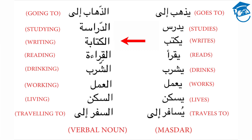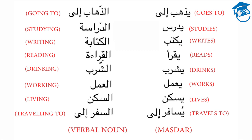Yaktabu — he writes. Al-kitabah, the verbal noun — writing. Yakra'u — he reads. The verbal noun, al-qira'ah — reading. The verbal noun, al-sharab — drinking. Ya'malu — he works. The verbal noun or masdar, al-amal — working.